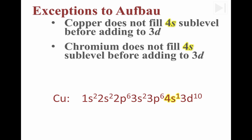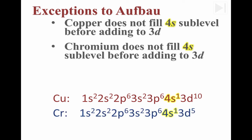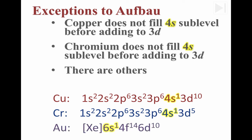We see something similar with chromium, which also doesn't fill its 4s sublevel before adding electrons to the 3d sublevel. The 4s sublevel for chromium also has only one electron. There are other elements that do this too — gold, for example, also has an unfilled s sublevel even though there are electrons in higher energy sublevels. This concludes our study of electron configuration and orbital diagrams. You now have all the tools you need to draw electron configurations and orbital diagrams on your own.